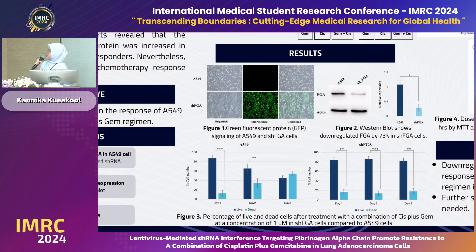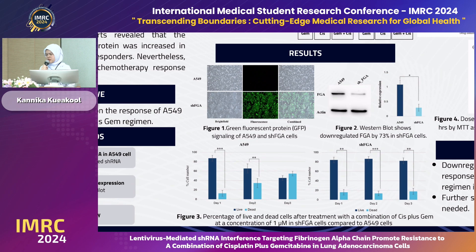The graph below shows the percentage of live and dead cells after treatment with cisplatin plus gemcitabine at a concentration of one micromolar. The right graph shows the percent of live and dead cells of shFGA cells that remain constant across all days, which is the difference from the A549 parental cells.